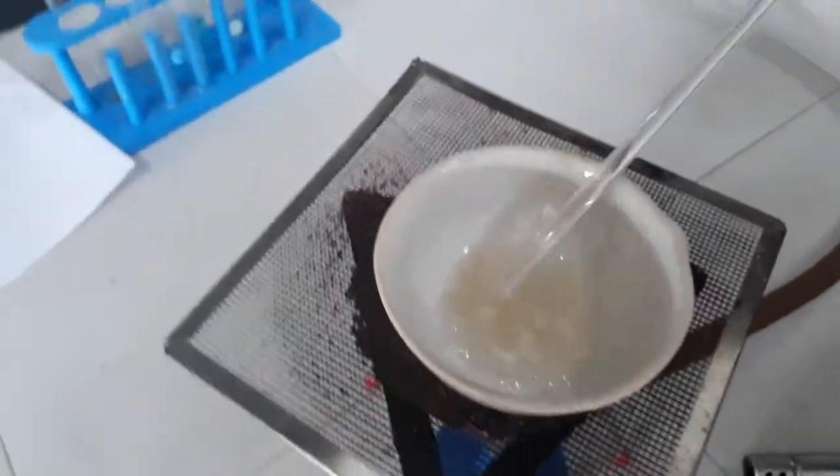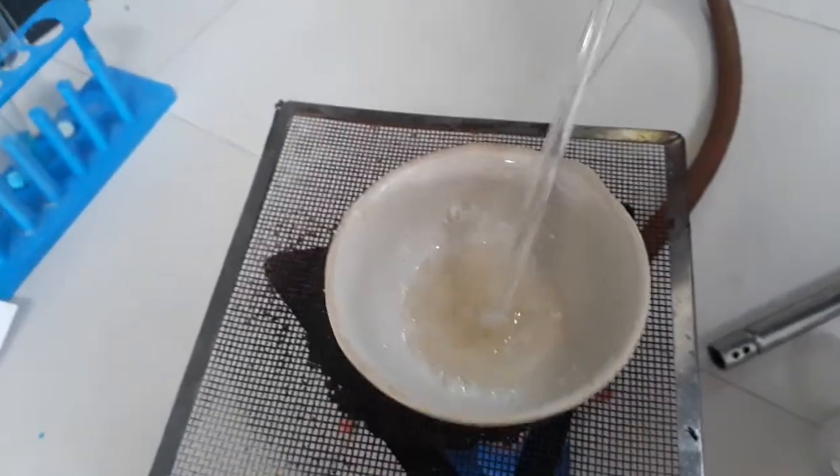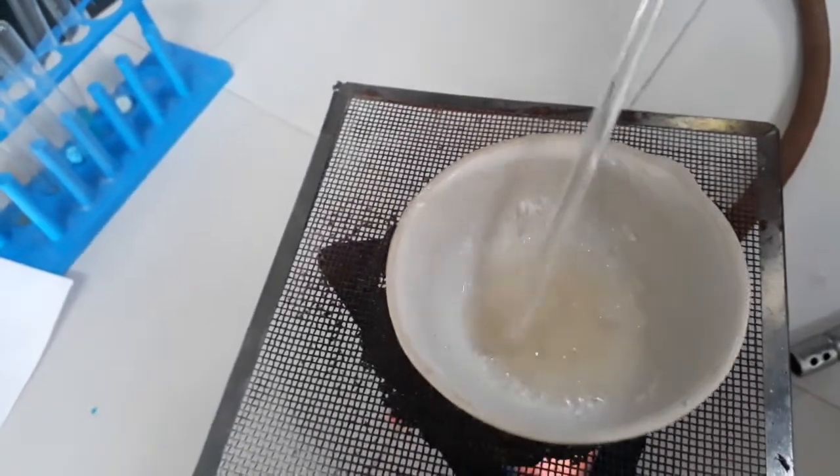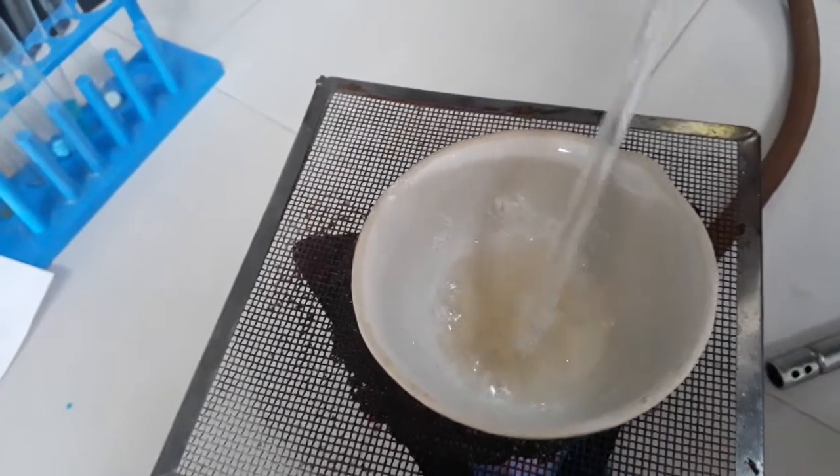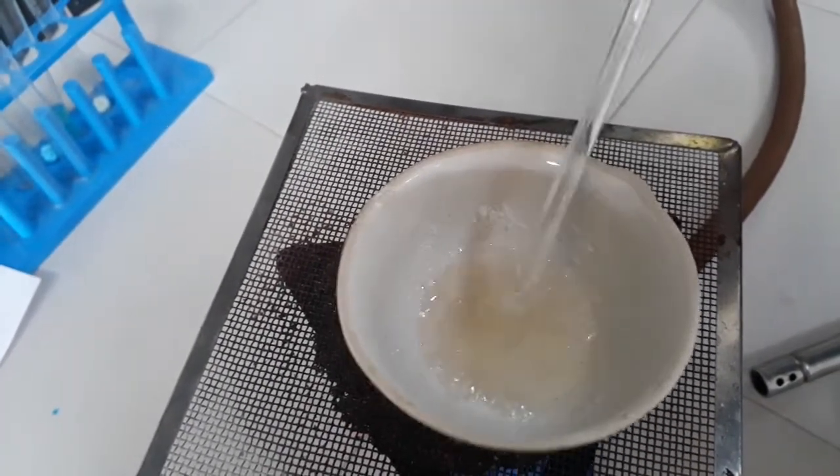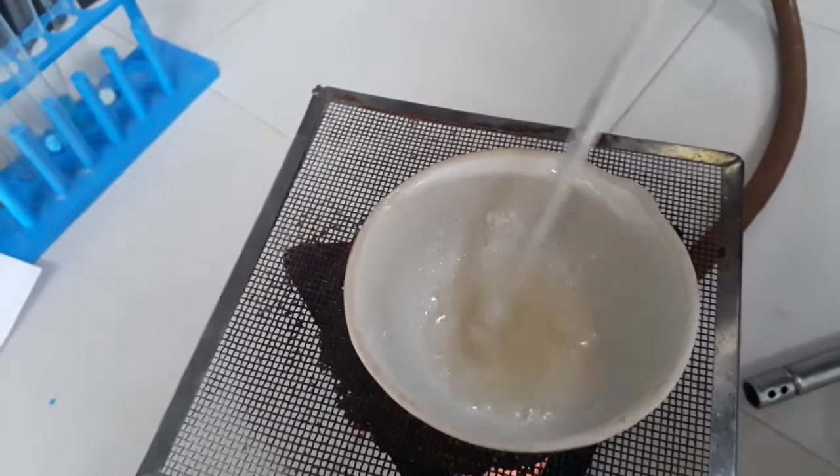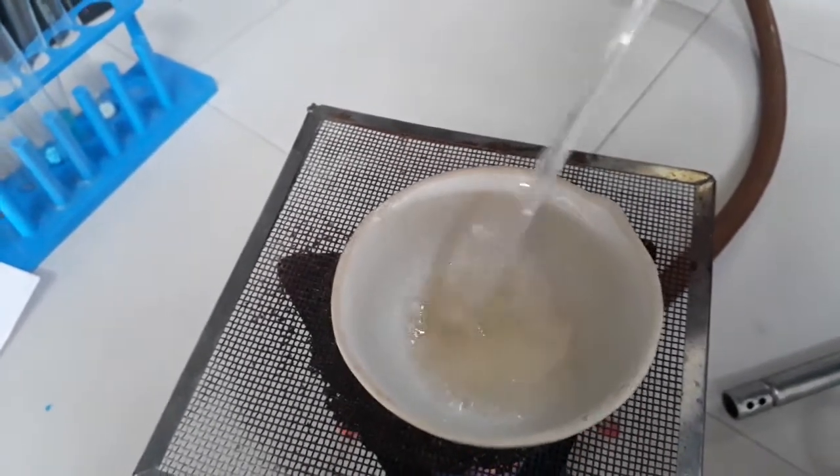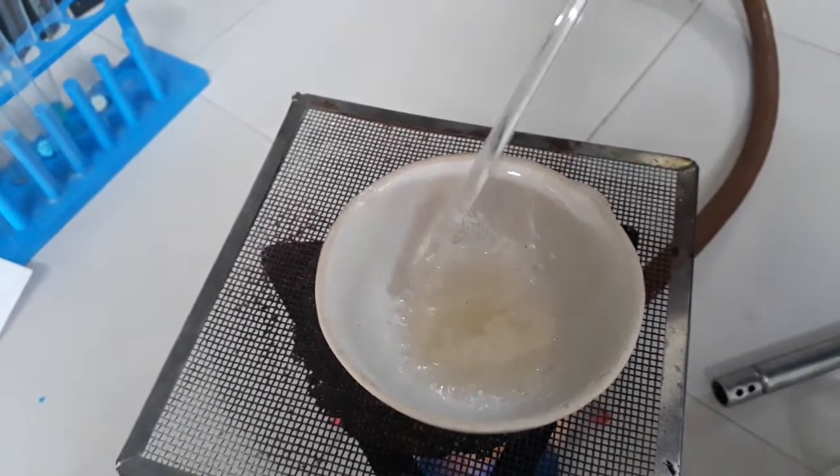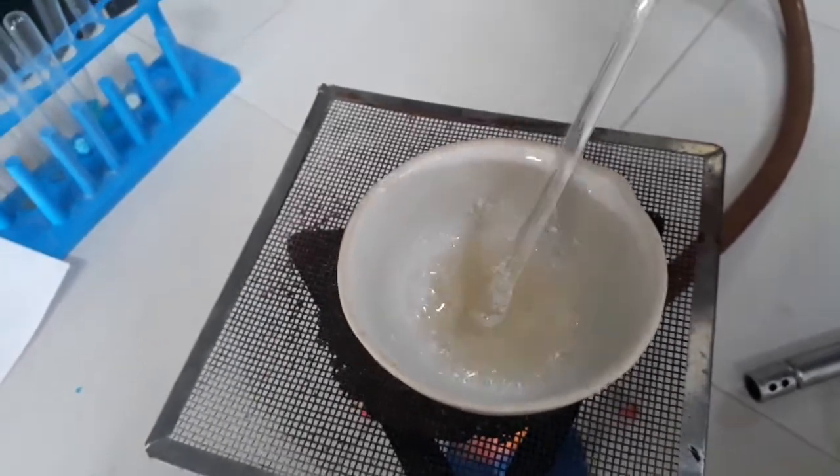After a few minutes you can see the whole alum is converted to liquid state and it is containing a large amount of water. That's why it is looking like this. Compared to copper sulfate and ferrous sulfate, here water molecules are large. In copper sulfate only 5 molecules are there, and in ferrous sulfate also 7 molecules are there.